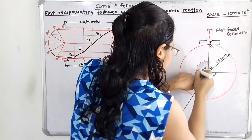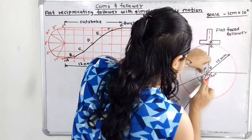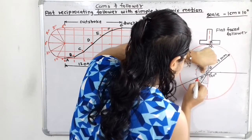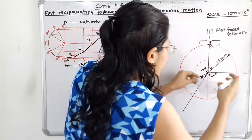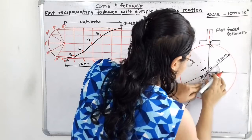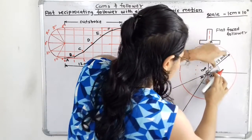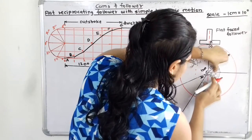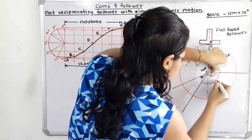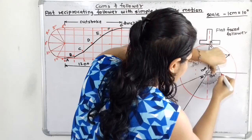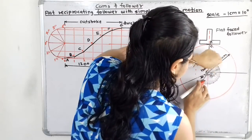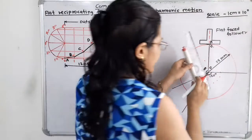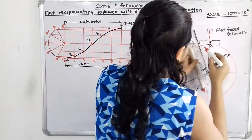As we made 6 equal parts in the displacement diagram, here also for outstroke and return stroke we make 6 equal parts — each part at 20 degree apart. With the help of a protractor we will take the angle of 20 degree each: 20, 40, 60, 80, 100, and 120. In the same way for the return stroke we make the same angle: 20, 40, 60, 80, and 120. Then we will draw the lines from center O passing through the selected points.